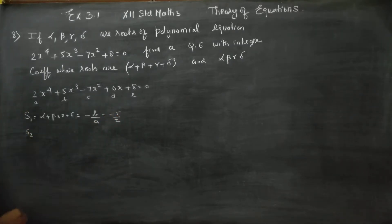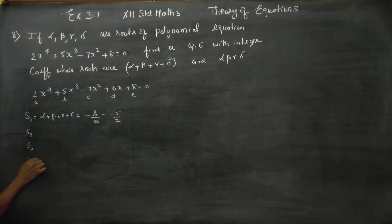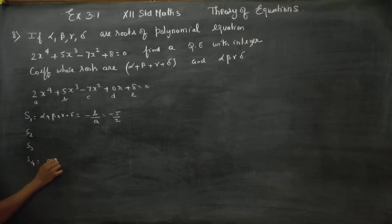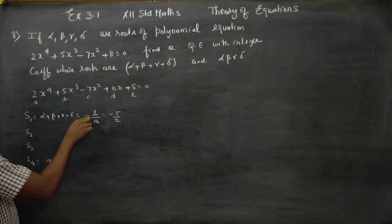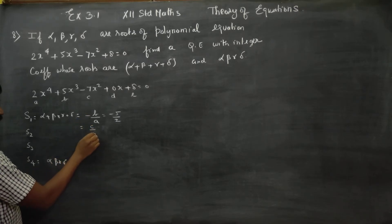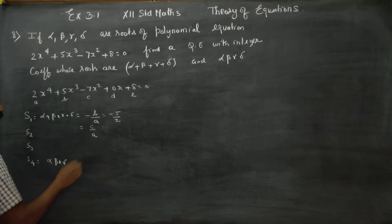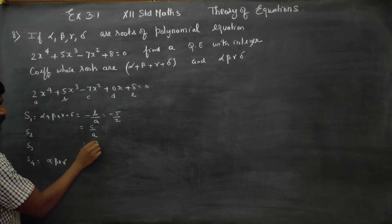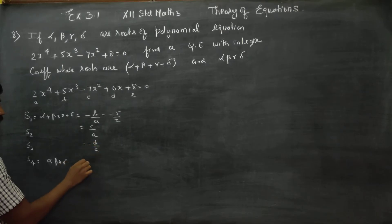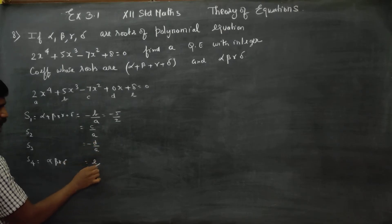S2 is 2 roots taken at a time. S3 is 3 roots taken at a time. S4 is 4 roots taken at a time — that is alpha·beta·gamma·delta. The formulas are: S1 = -B/A, S2 = +C/A, S3 = -D/A, S4 = +E/A.